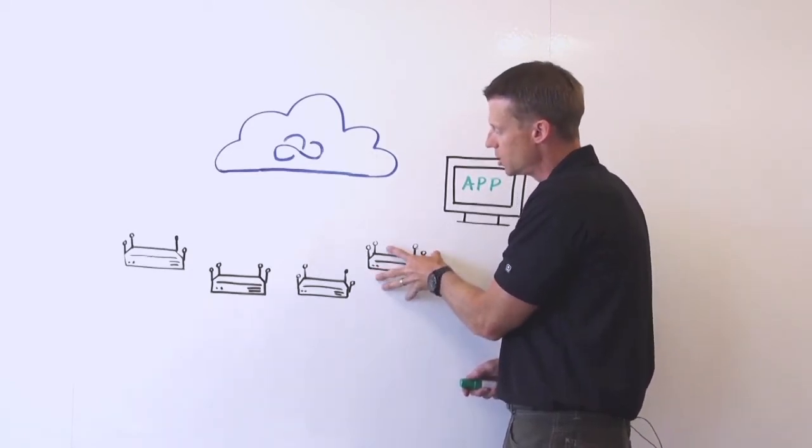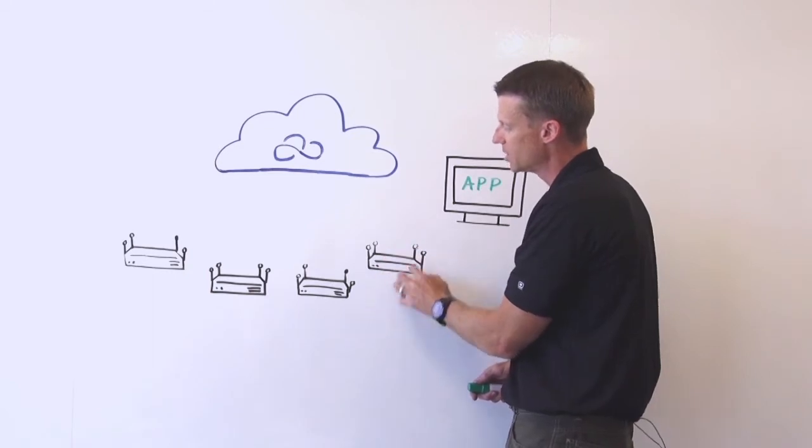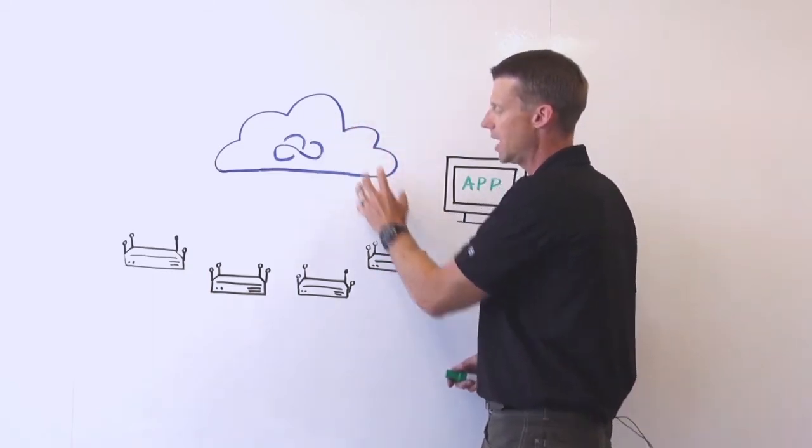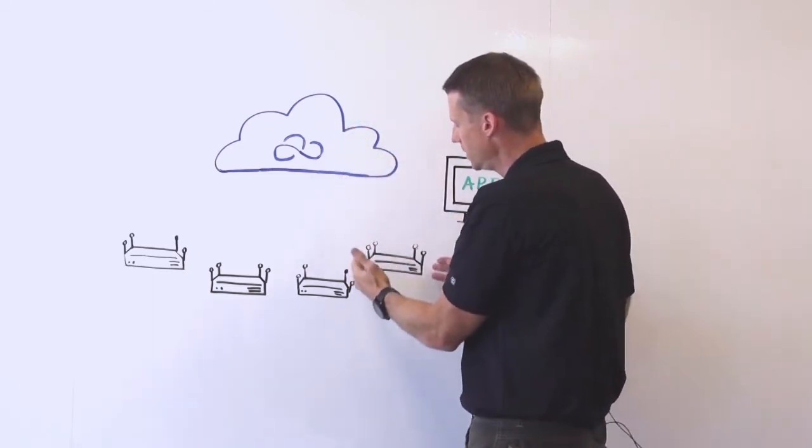By running it at the edge, you can only pull up the data that's relevant to the cloud, not all the data, and make the decisions locally.